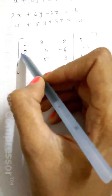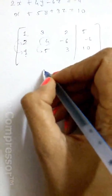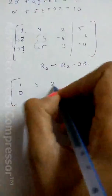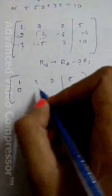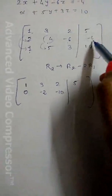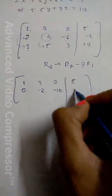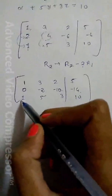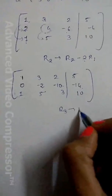Using the first element of row 1 we need to make the first elements of rows 2 and 3 equal to zero. We apply R2 → R2 − 2R1: the result is [0, 4−6, −6−4, −4−10] = [0, −2, −10, −14]. The first row remains [1, 3, 2 | 5].